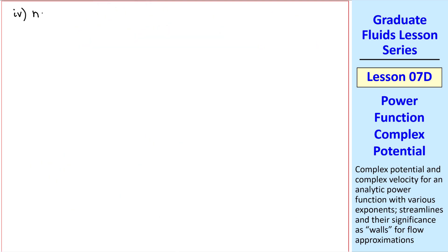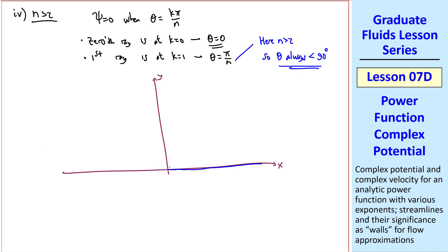Now consider the case when n is greater than 2. Again, rays of psi equal 0 occur when theta is k pi over n. So the 0th ray is at k equals 0, which always gives us theta equals 0, the x-axis. The first non-zero ray is at k equal 1, which is at theta equal pi over n. Well, here n is greater than 2, so theta is always less than 90 degrees. I'll sketch just the upper half of the flow. The 0 ray is along the x-axis, and the k equal 1 ray is at some acute angle, theta equal pi over n. If we rotate another pi over n, we get the second ray. Again, you'd have to solve for psi as a function of x and y to plot streamlines. They turn out to look something like this on the right side, and mirror image about the k equal 1 line on this portion.